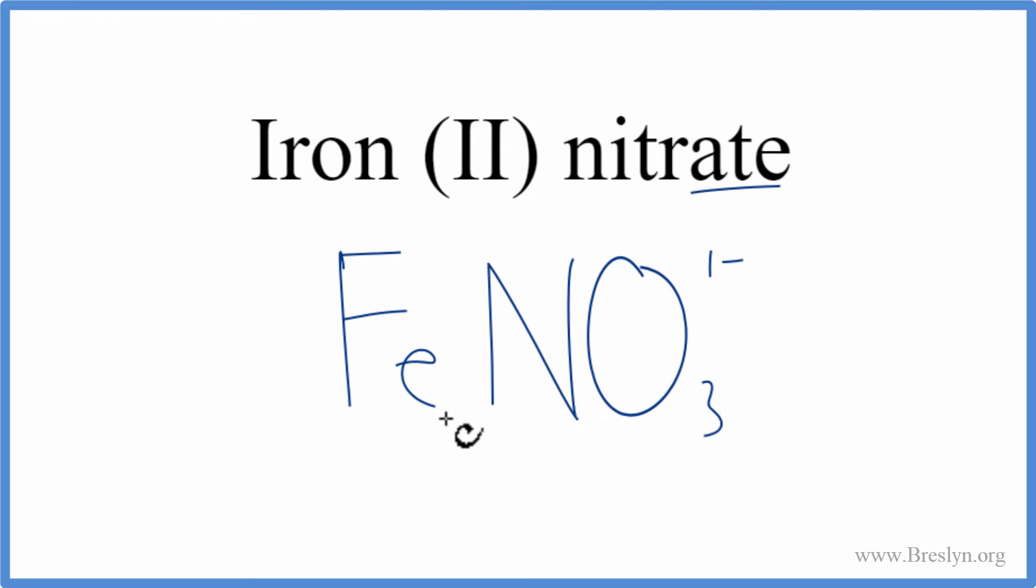With ionic compounds, we need to take the charges on the iron and then on the nitrate into account. For the iron, it tells us right here, that has a 2+ ionic charge. And when we looked up the nitrate, that has a 1-.